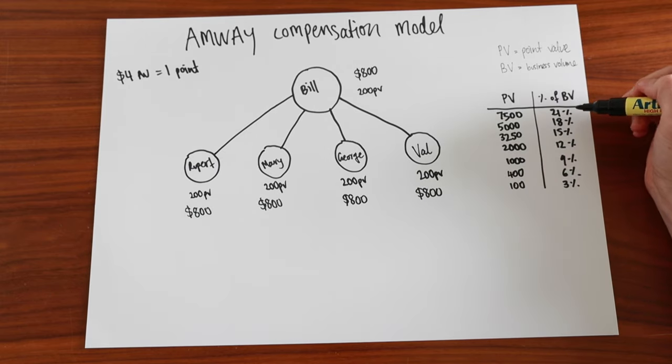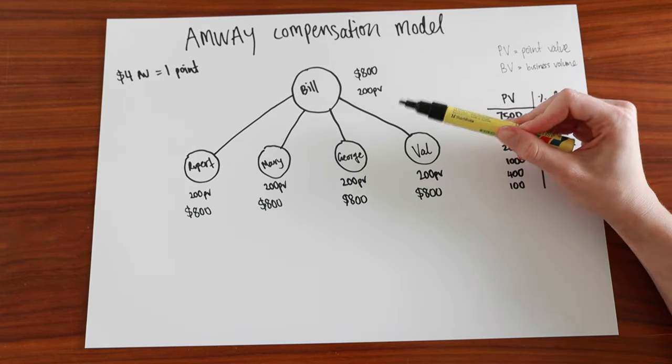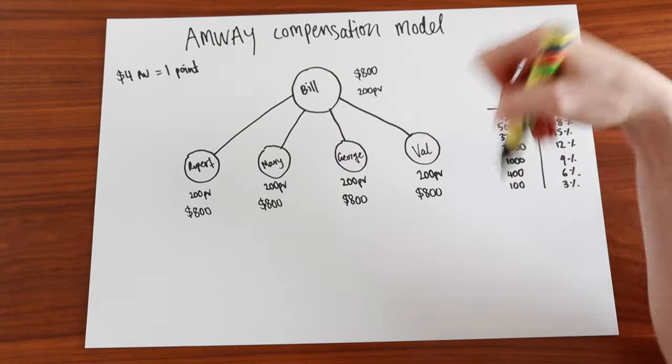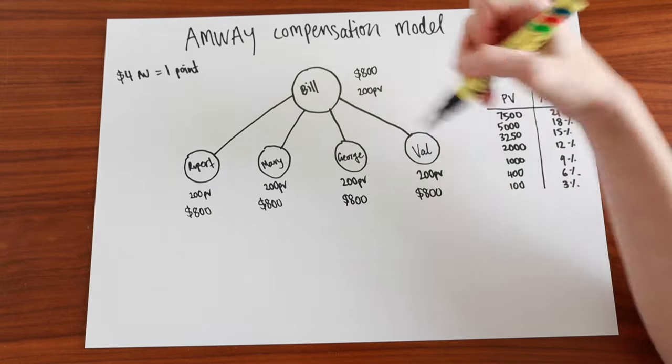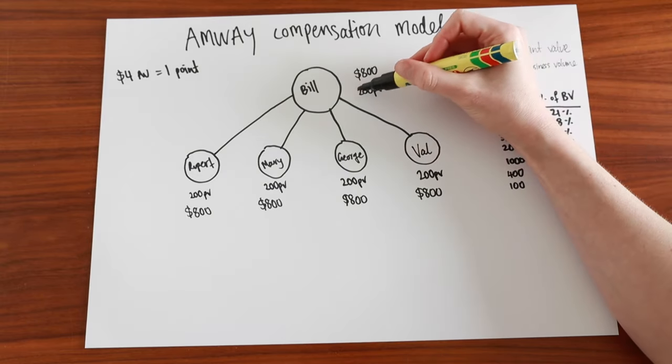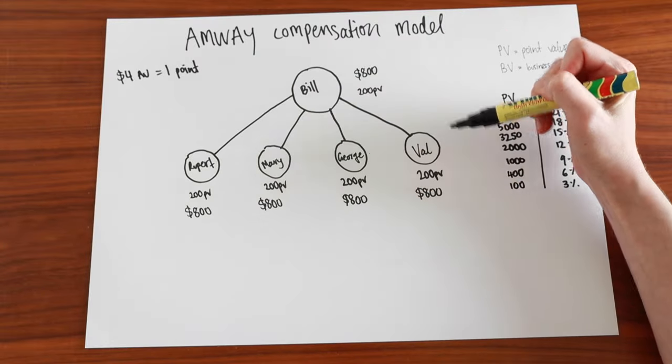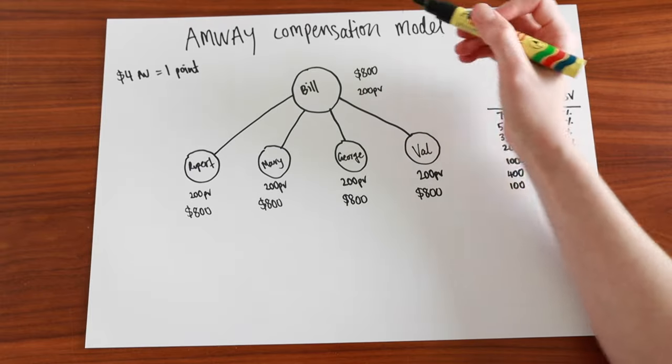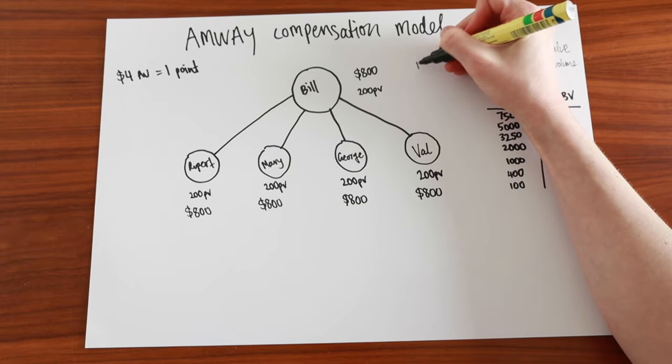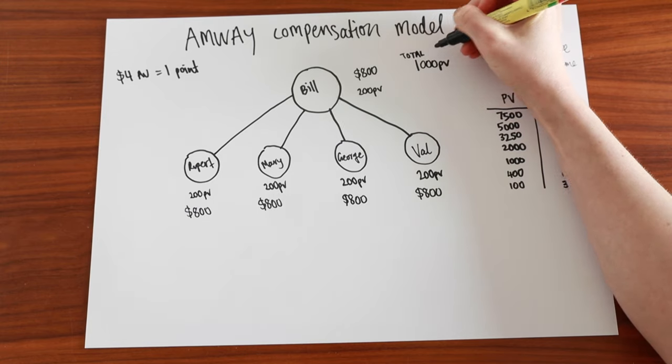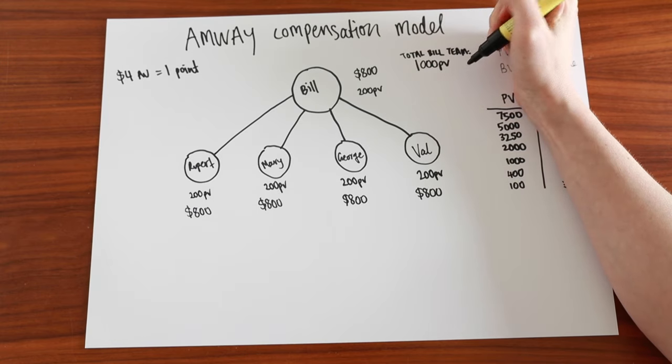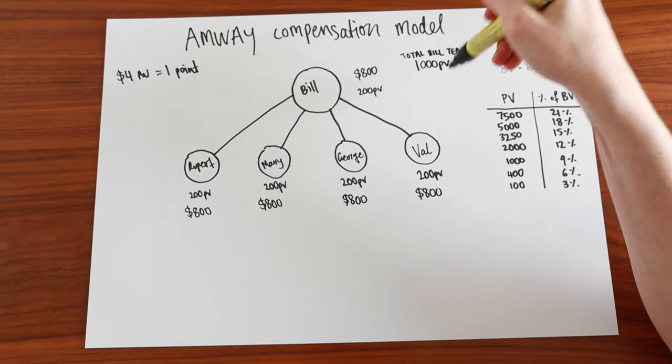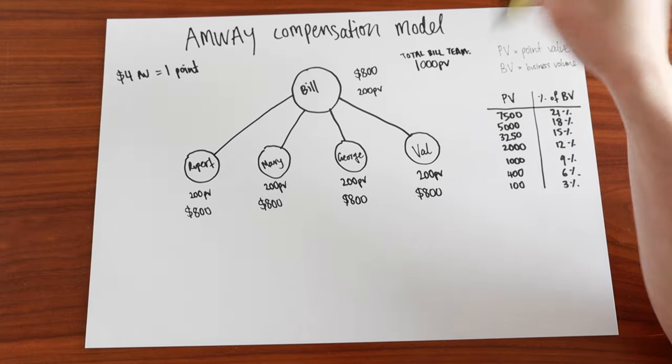And you use this table to calculate how much Bill will get back. Bill's total business of himself and his team, you calculate it in PV. So 200, and then each of his four people on his team or his downlines spends 200 PV each. So that's a total of 1000 PV. So essentially, him and his team are spending $4,000 per month on Amway products.